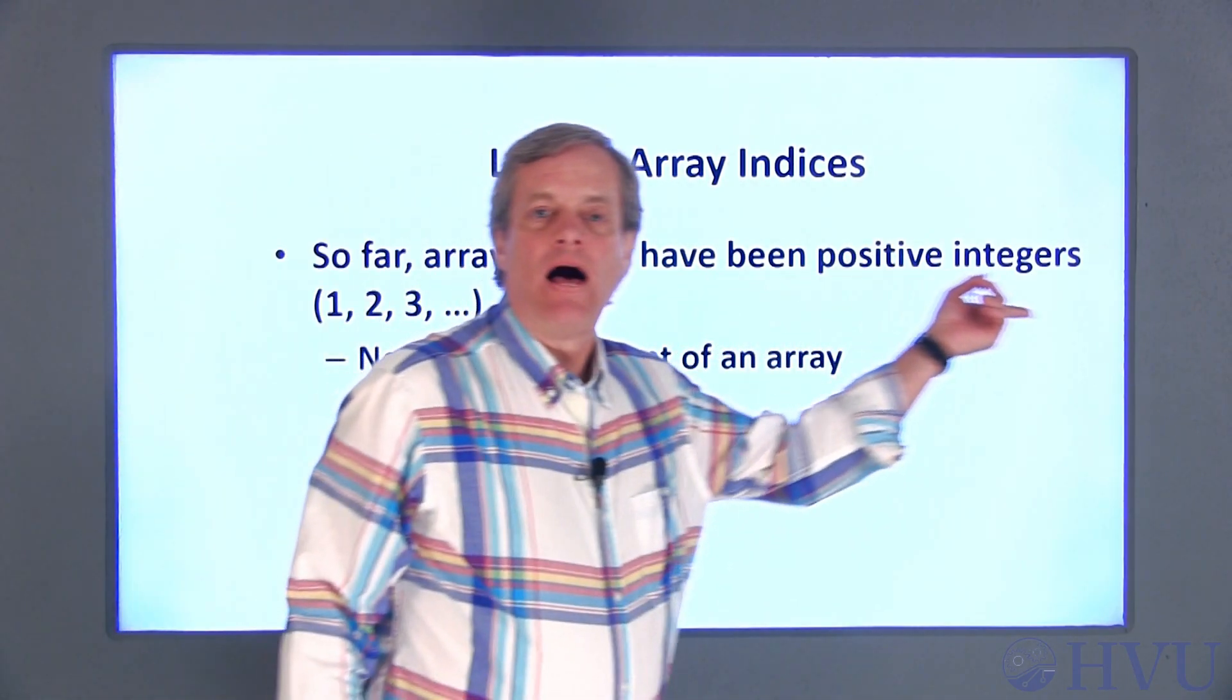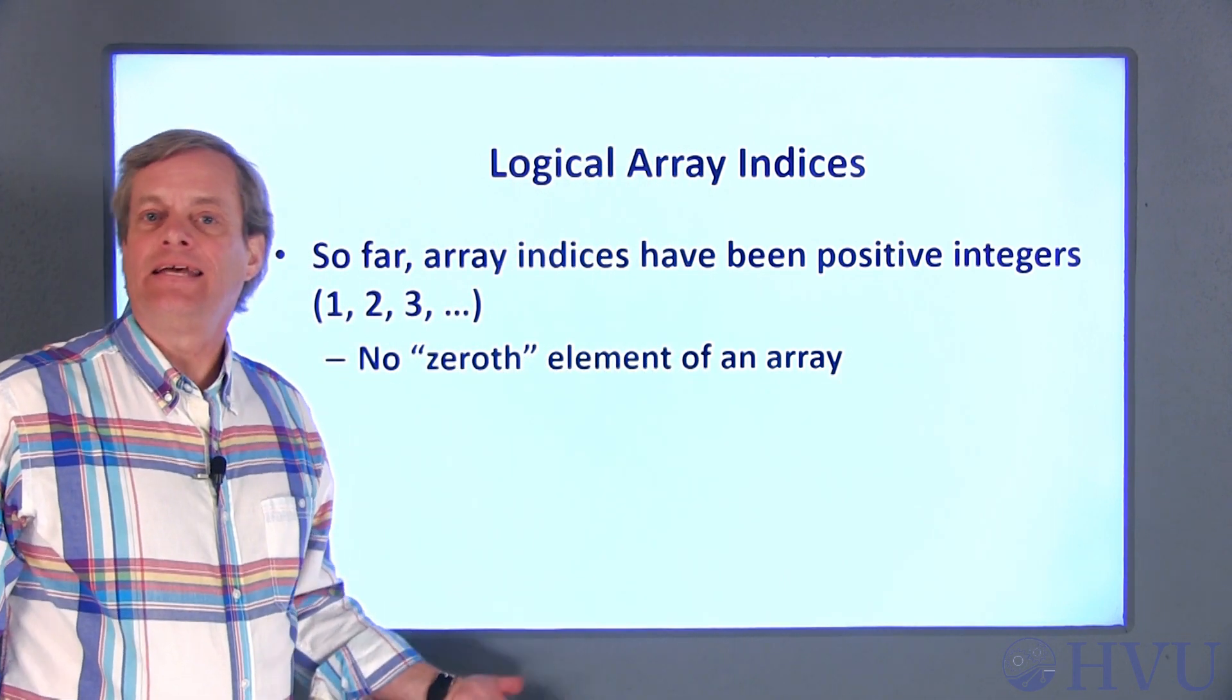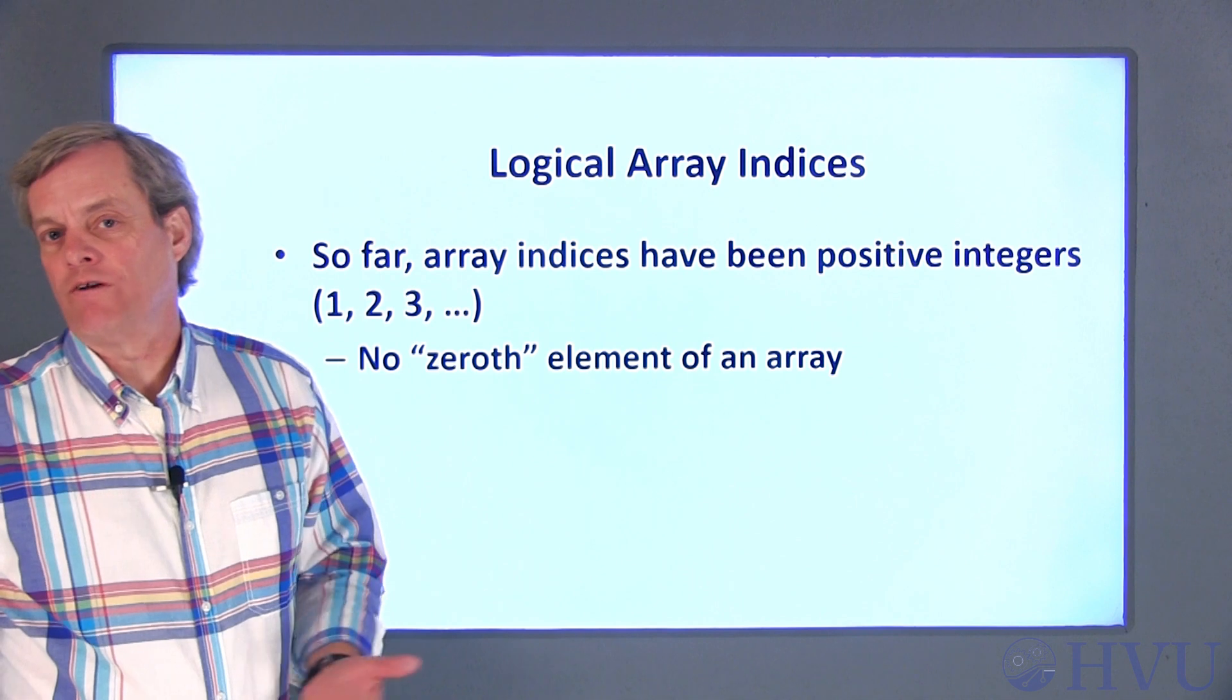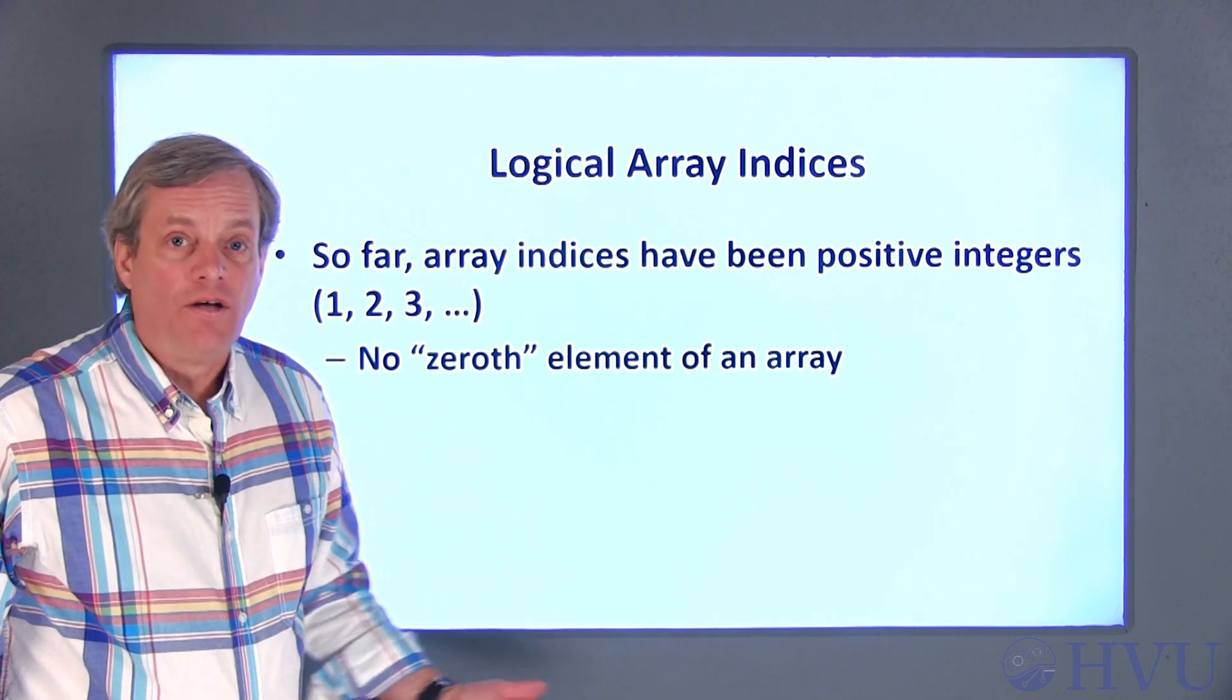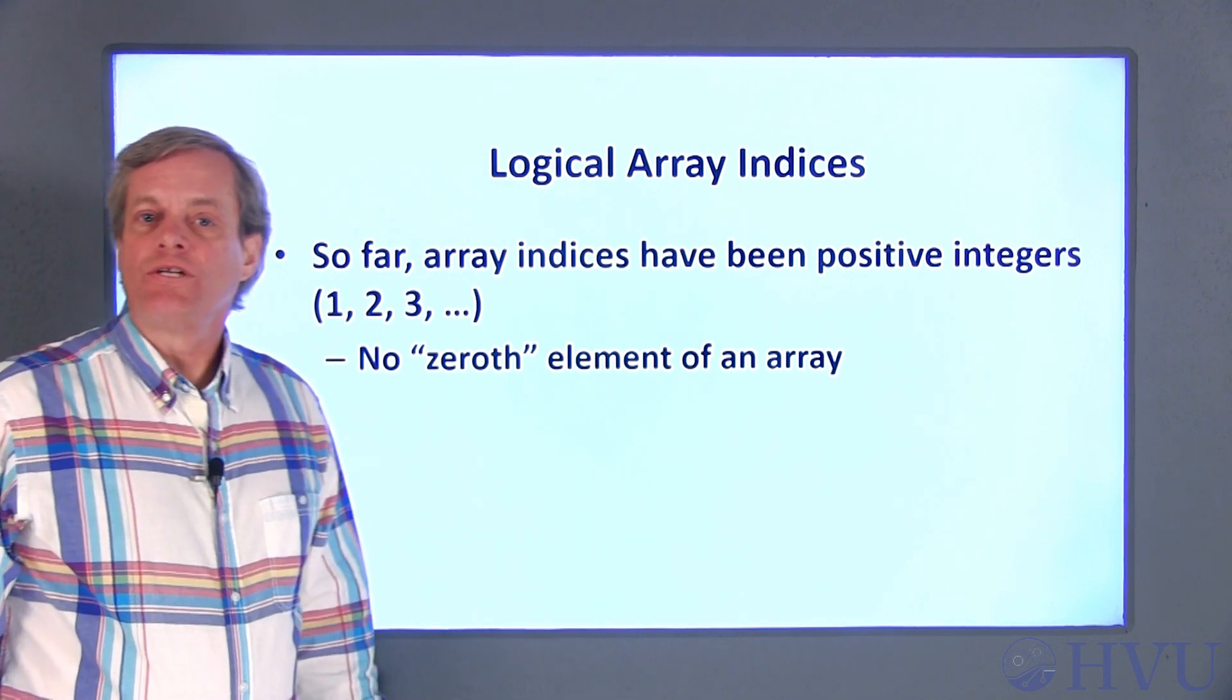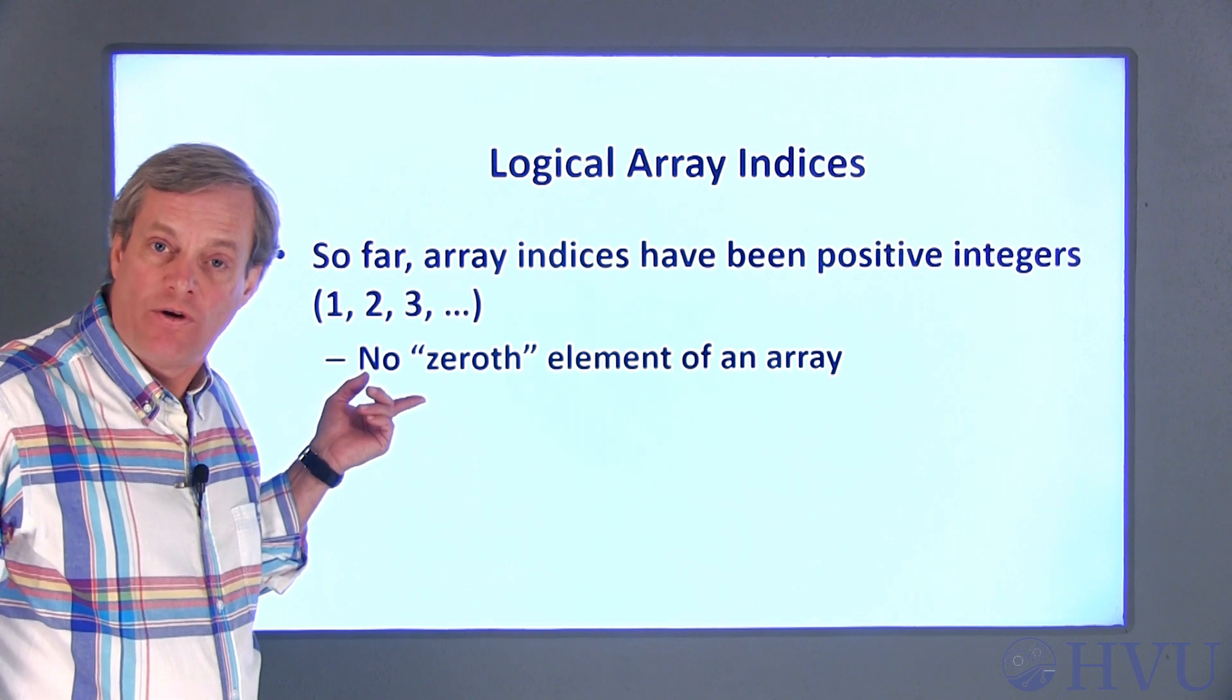Up until now, I've only used positive integers as array indices. So I can get a number that's in the third row and fourth column of an array by using the indices. MATLAB starts counting rows and columns with one, so I haven't been able to use a zero as an array index.